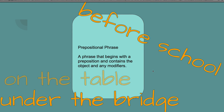A prepositional phrase is a phrase that begins with a preposition and contains the object, which is a noun or pronoun, and any modifiers. So we have examples like: before school, on the table, under the bridge.